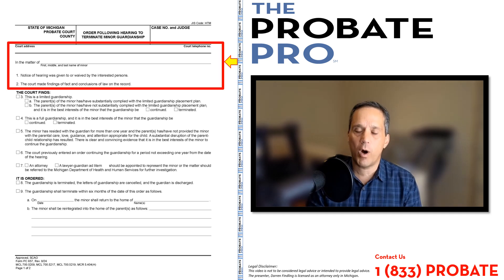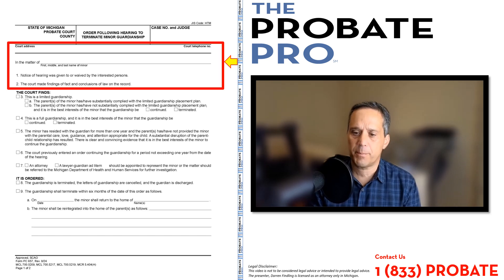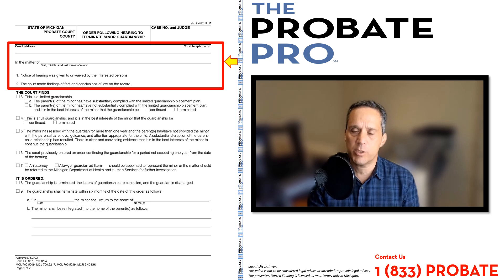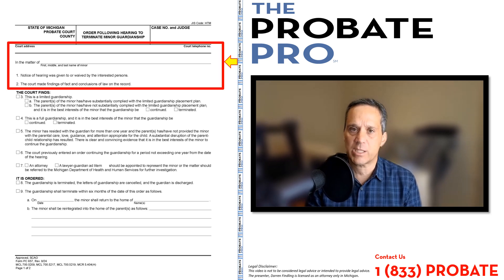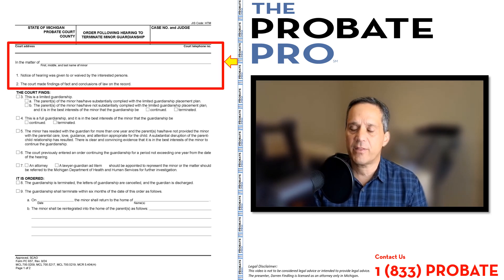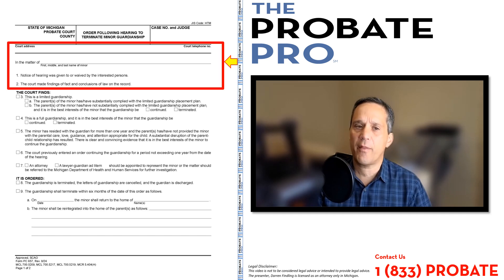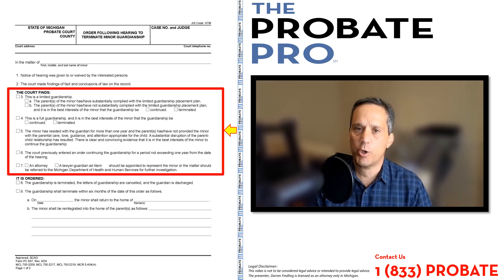Paragraph one provides that notice of hearing was given to or waived by the interested parties. This is a ruling of the court to show that notice pursuant to Michigan court rule has been provided to all appropriate parties, and that the court has made the findings and conclusions of law on the record under paragraph two.